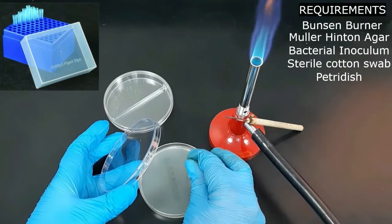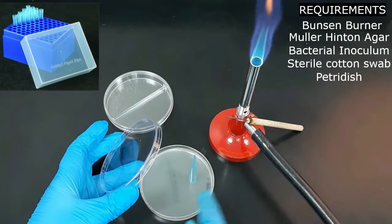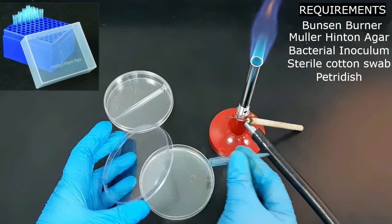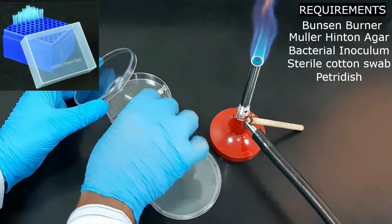Then puncture the well with the backside of a blue micropipette tip with little pressure. Slightly rotate left and right, then remove and discard the tip.